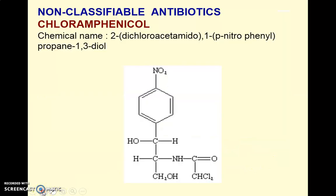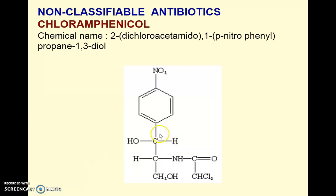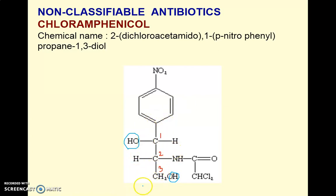Moving on to the next antibiotic: the non-classifiable antibiotic chloramphenicol. Regarding its structure and chemical name, we select propanediol as the parent nucleus. The structure has a first, second, and third carbon — this propane diol has two different hydroxy groups: the first hydroxy group and the second hydroxy group. So the parent nucleus is propane-1,3-diol.